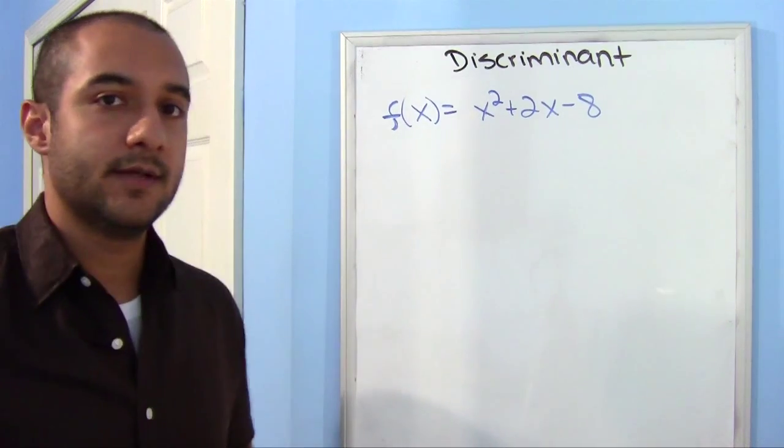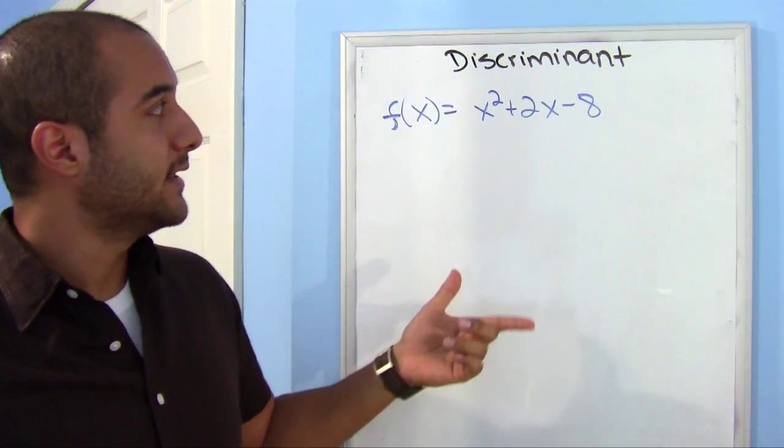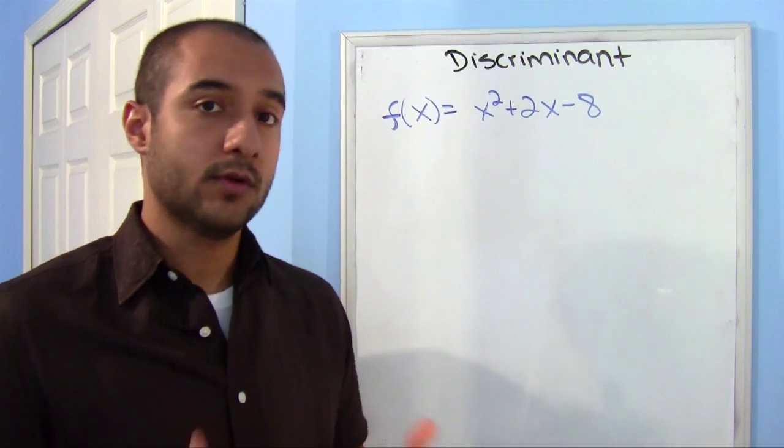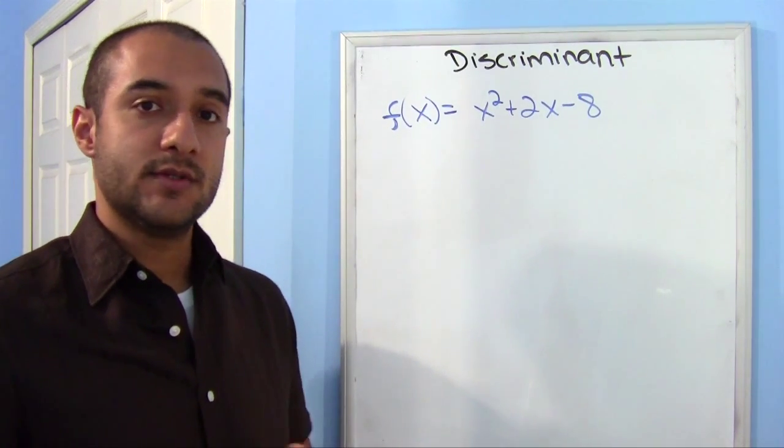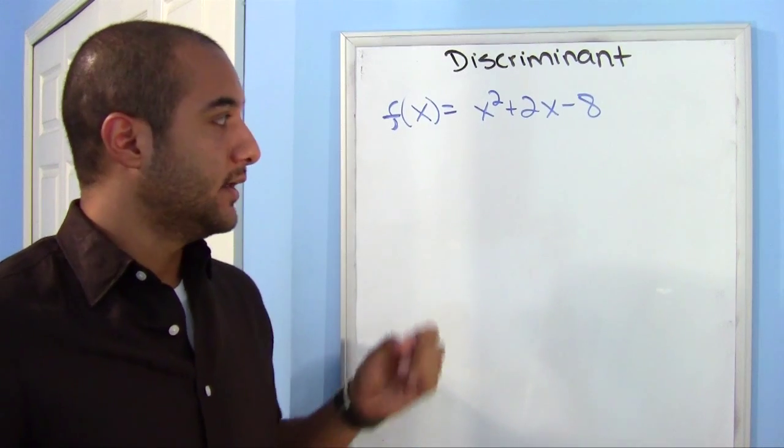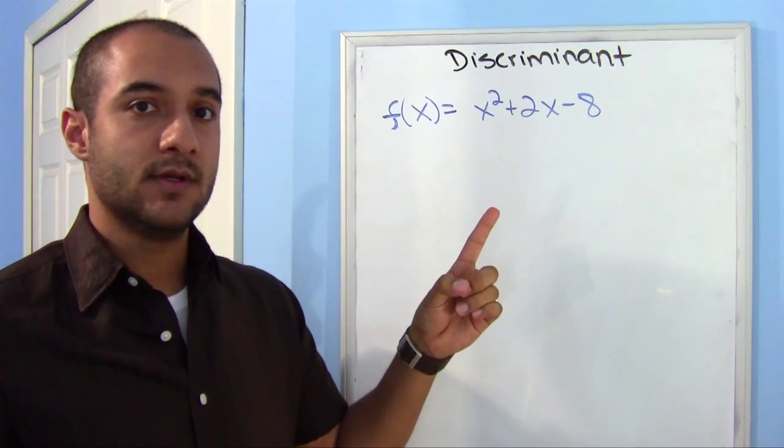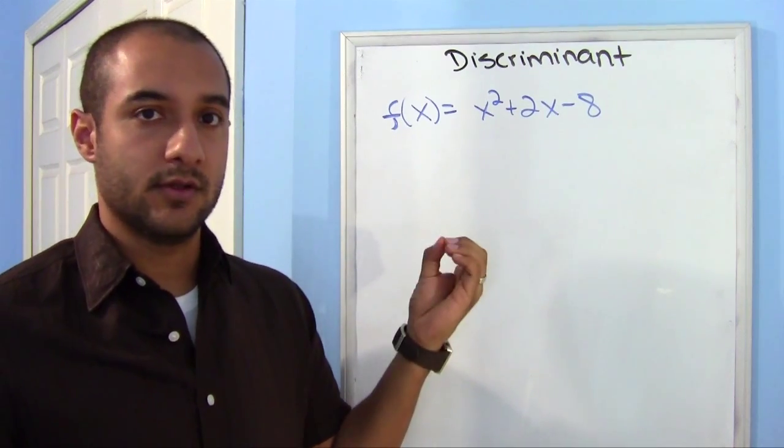All right, so more information that you can get before graphing is actually finding out if your function will cross the x-axis. There's actually three scenarios. It'll either cross it twice, it'll cross it once, or it'll cross it none at all.